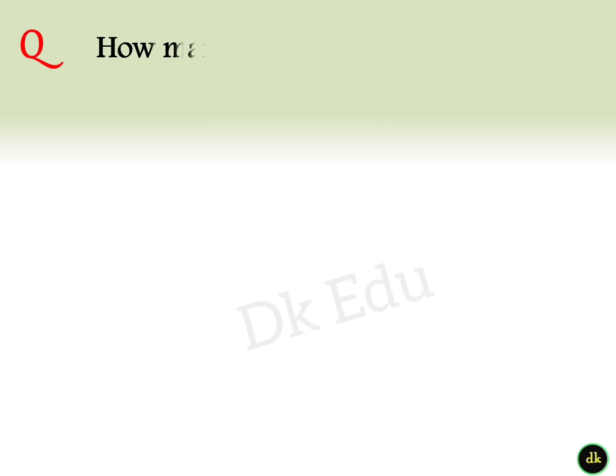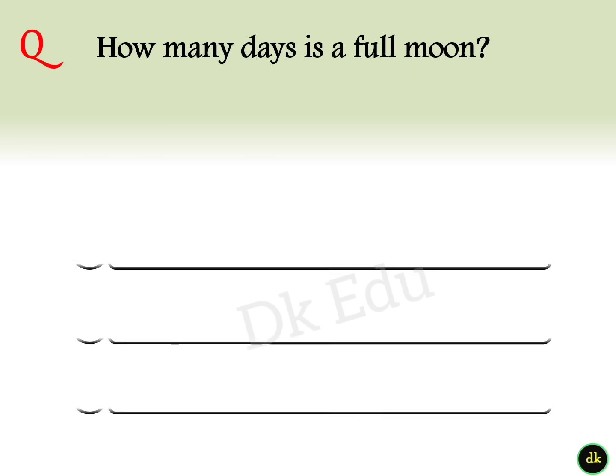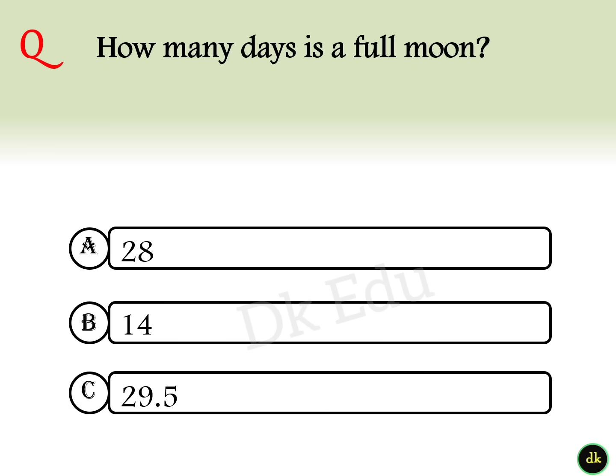25th question: How many days is a full moon cycle? Answer option C: 29.5 days.